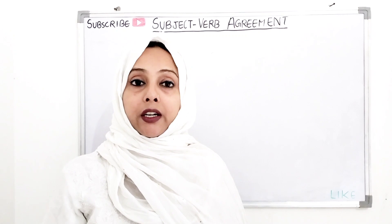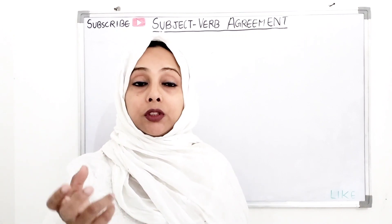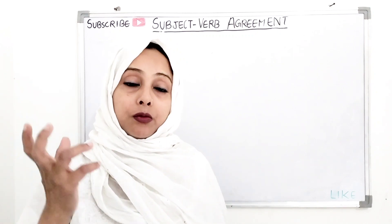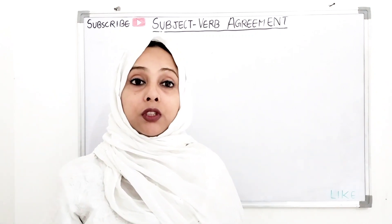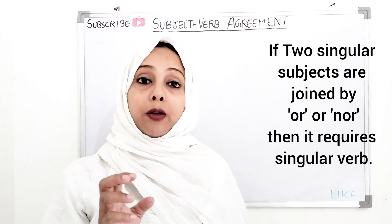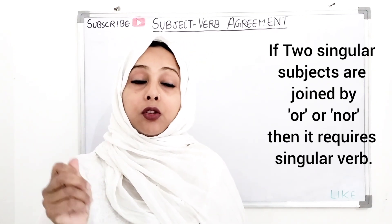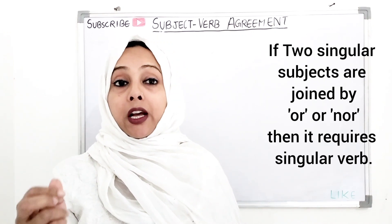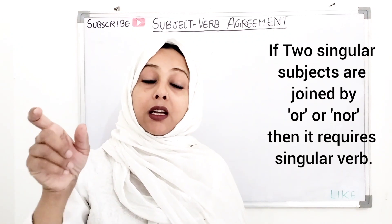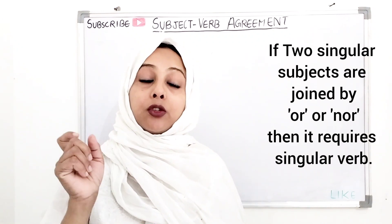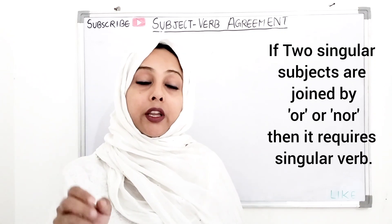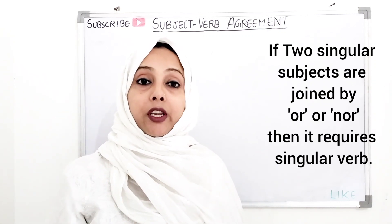Now moving towards when we have to use a singular verb in a sentence. I have told you that if we have two singular subjects joined by AND, we use a plural verb. But if there are two singular subjects joined by OR or NOR, then we will use a singular verb.